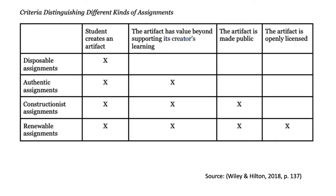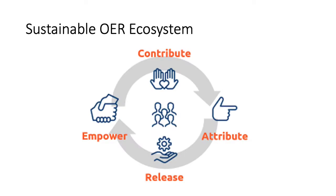Here is a chart to clarify how renewable assignments differ from more traditional assignments. Renewable assignments involve having students create an artifact that is then openly licensed. In this way, the student is not only promoting their own learning, but they are creating something that can be used by others — and those five R's can then relate to that renewable assignment if it's openly licensed. This creates a sustainable OER ecosystem. If we just had people passively receiving materials but not actively creating them, we wouldn't have a sustainable ecosystem and would eventually run out of creators.